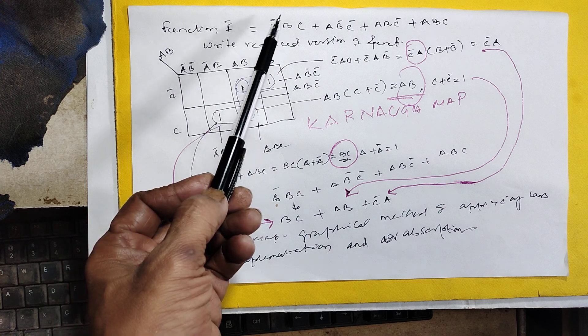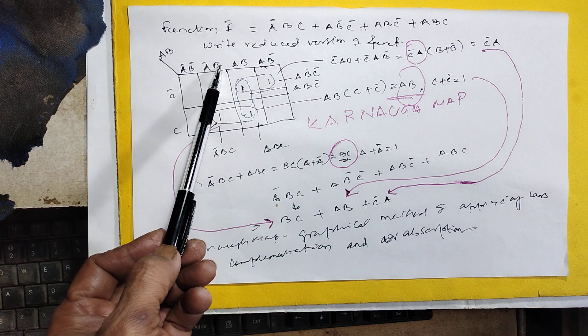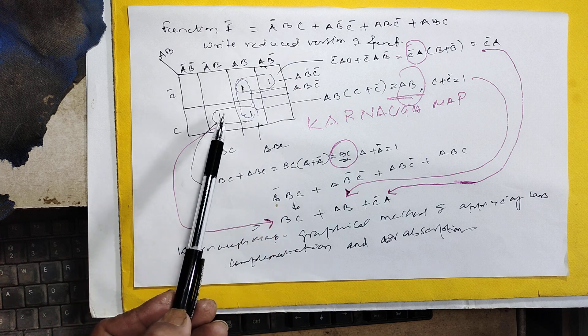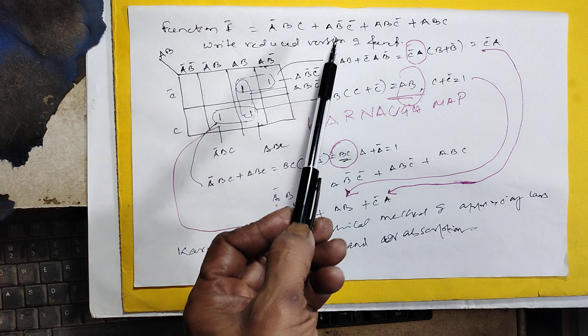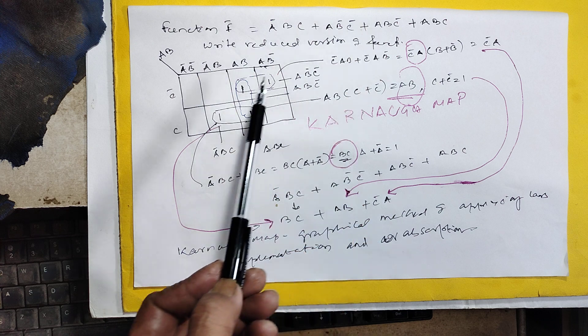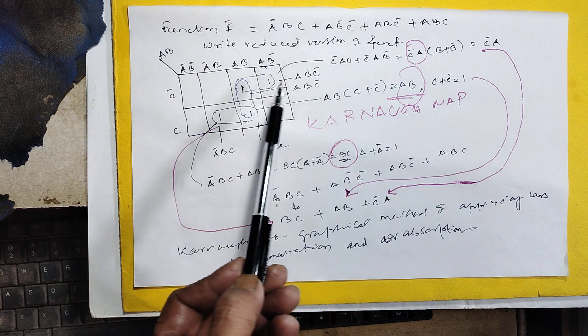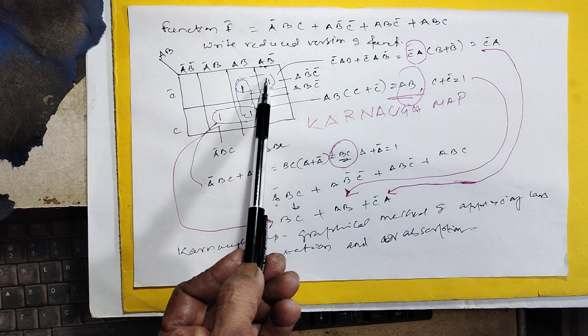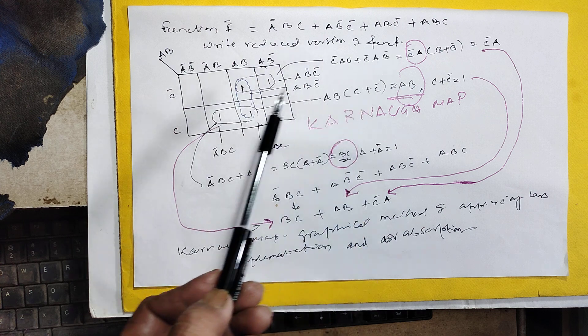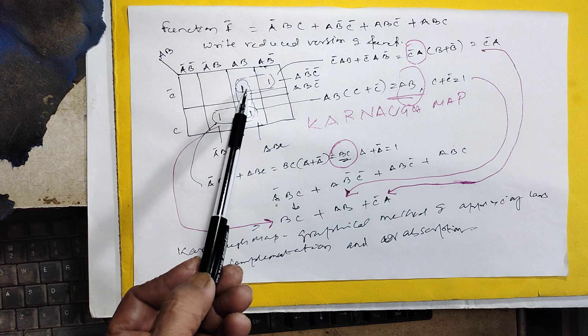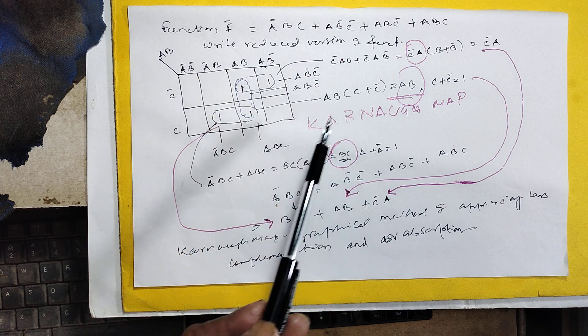Now we go to what is given, the function. a'bc - for a'b put one here. Then ab'c - for ab' put one here. Then abc' - for ab and c' put one here. Then abc, put one here.